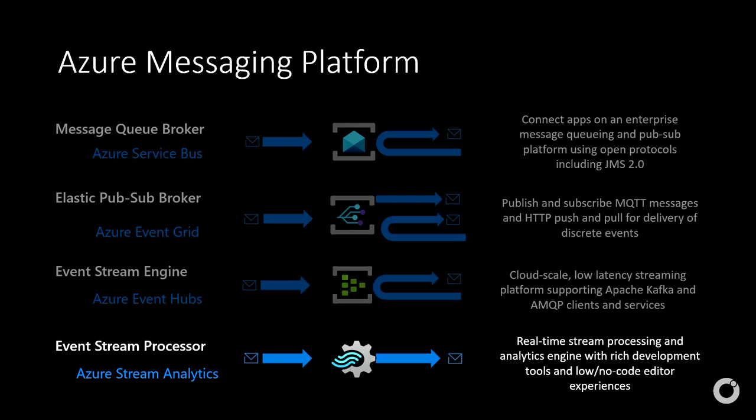Azure Stream Analytics is our event stream processor. When you have a stream of events coming into Azure Event Hubs, you can use Stream Analytics to process events, do analytics, aggregations, and real-time processing — it's our real-time stream processing engine with rich development tools and low-code/no-code experiences. It's really important to know these tools: if you're working with events, choose something optimized for events; if you're working with messages, choose something optimized for messages. About 75% of Fortune 500 customers use two or more of our services together.